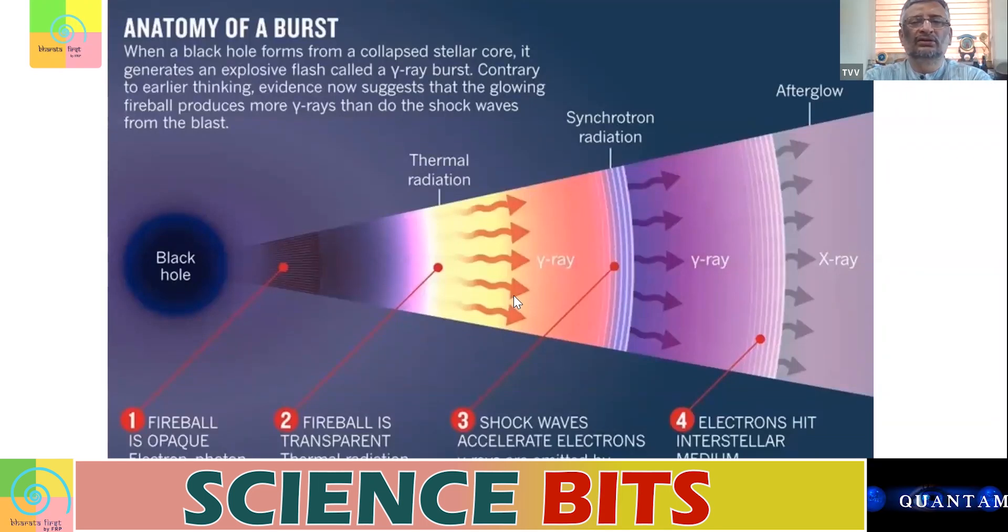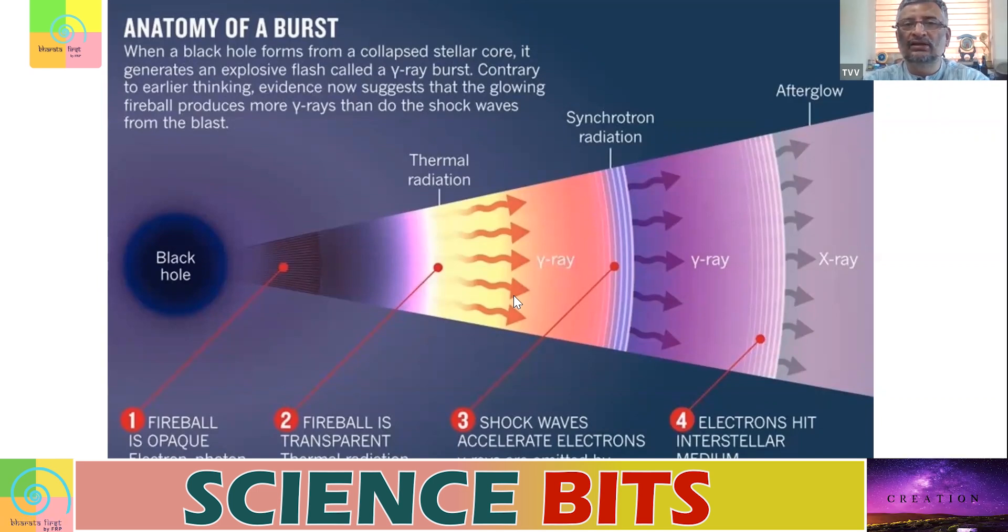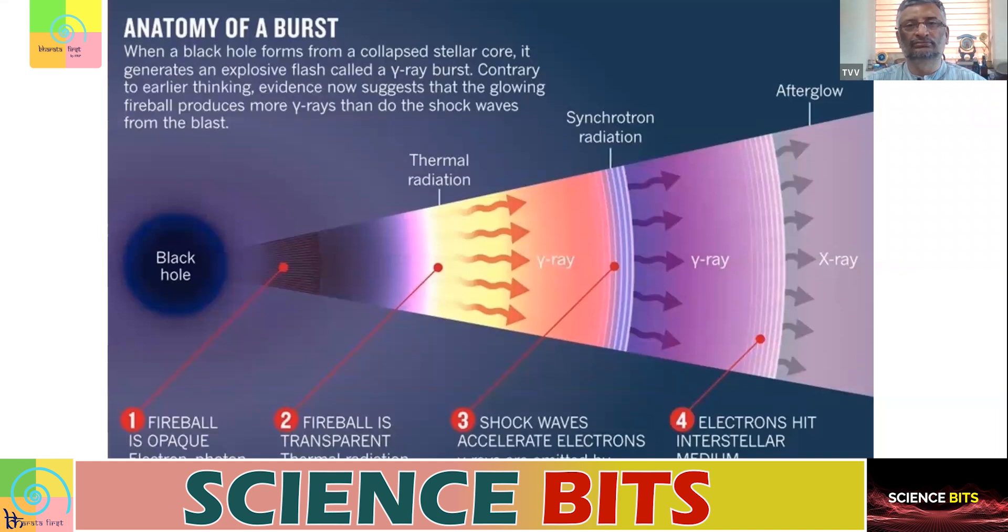Today there is an idea, a hypothesis, why these gamma rays occur, what is called the sudden burst of gamma rays. Today, the dominant idea is when black holes are formed, when black holes are given birth, when they are being born, these gamma rays come out. That is the current theory.